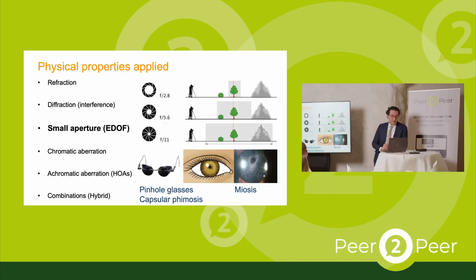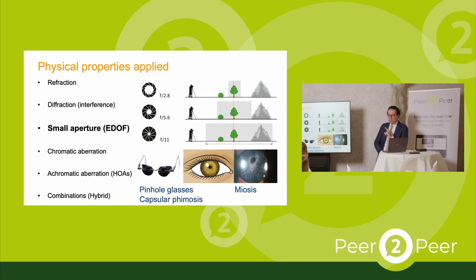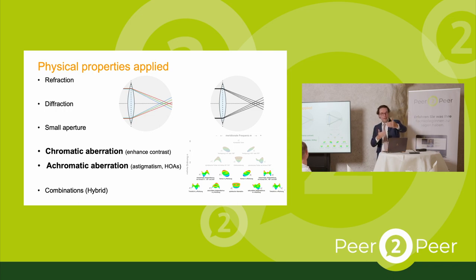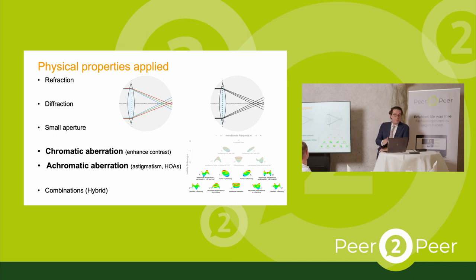We also have small aperture lenses — you know the IC8 lens, for instance. It has a pinhole effect. That's the only situation where we should use the term EDOF, Extended Depth of Focus — only this kind of small aperture. Everything else is something else. Then we use chromatic aberration and higher order aberrations, mainly asphericity, which I would call EROF lenses — Extended Range of Vision. They help us to have not a focus point but stretch it into a focus line.